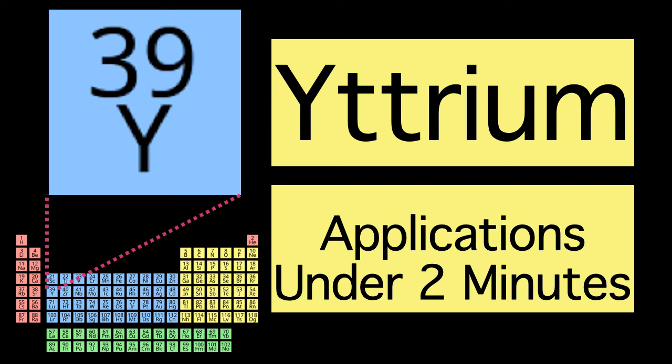Welcome to 2-Minute Periodic Table Applications. Yttrium is a chemical element with the symbol Y and atomic number 39.